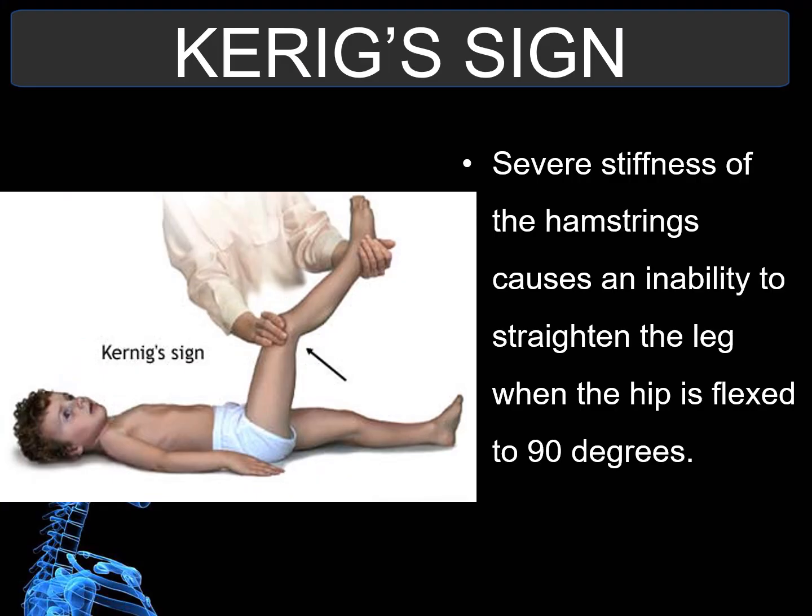Kernig's sign involves severe stiffness causing an inability to straighten the leg when the hip is flexed to 90 degrees. Named after Russian neurologist Waldemar Kernig, the test is positive when the thigh is flexed at the hip and knee at a 90-degree angle, and subsequent extension of the knee is painful, leading to resistance. This may indicate subarachnoid hemorrhage or meningitis.